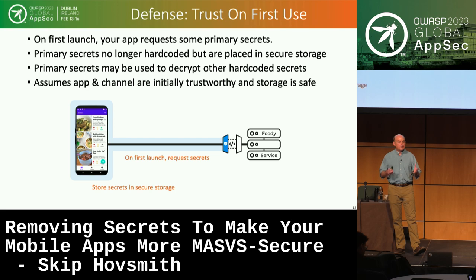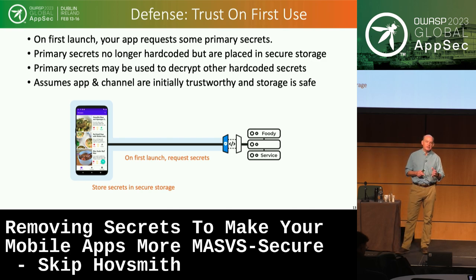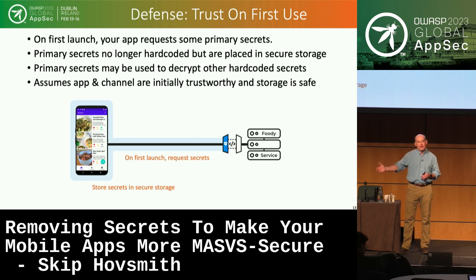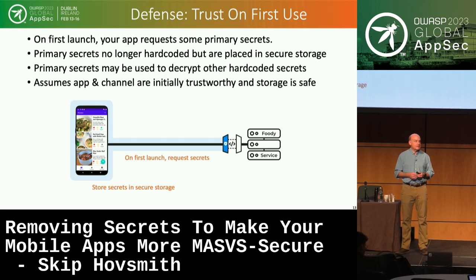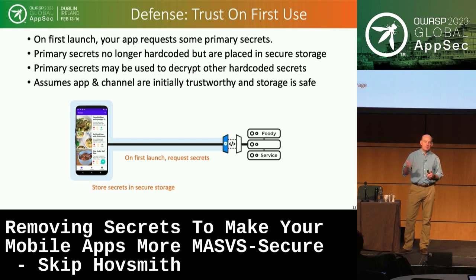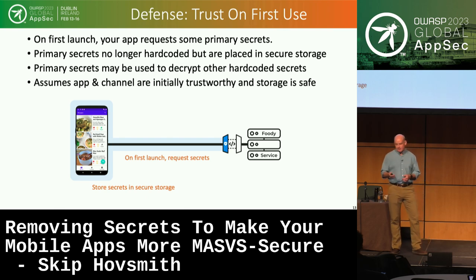Another defense: if you really don't want a secret hard-coded in the device, you could try asking for it. Trust on first use (TOFU): when the app is first installed, on first launch it reaches out to your service and asks for primary secrets, which it can then use as decryption keys for other obscured secrets in the application. It assumes trust is there on first use, so man-in-the-middle attacks are very popular here.